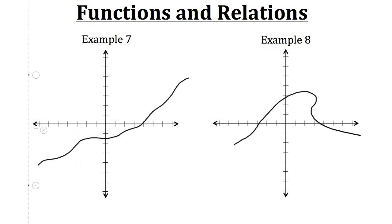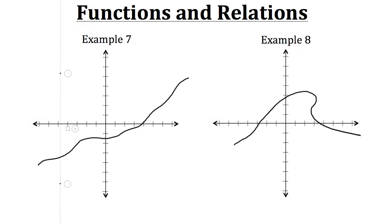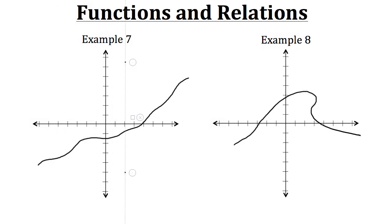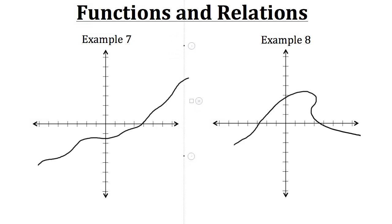As you can see with example 7, as we sweep this vertical line across, it's always touching only one point on the relation. It never touches more than one at the same time. So example 7 would be a function.